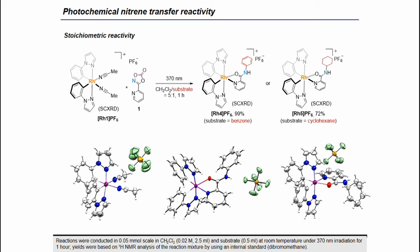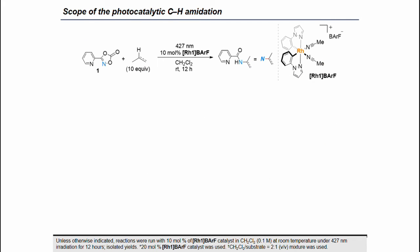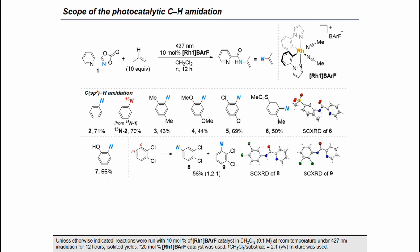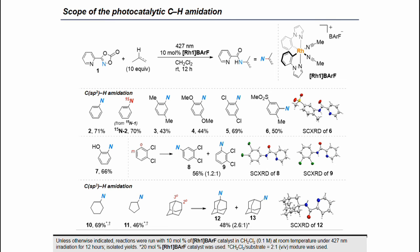Having identified that rhodium acyl nitranoid species could be produced upon photoirradiation, we were next curious about its reactivity. Indeed, when irradiating the sample with benzene or cyclohexane, we observed the corresponding sp2 or sp3 CH amination adducts, and the structures of the product complexes were further confirmed by X-ray crystallographic analysis. Fortunately, this stoichiometric reactivity could be further expanded to the catalytic reaction, where photocatalytic CH amination under visible light irradiation conditions gives a diverse range of sp2 or sp3 CH amination products.